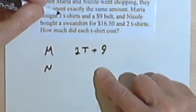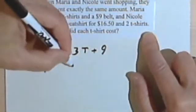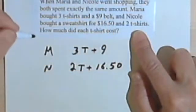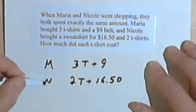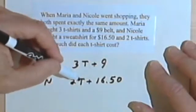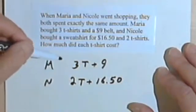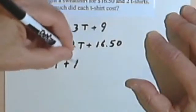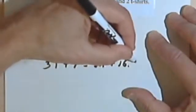Nicole bought... Let's see. I'm sorry, Maria bought 3 t-shirts. I have to get our information right. Nicole bought 2 t-shirts and she also spent $16.50. Now what we know is that Maria and Nicole spent the same amount of money. So if this is the amount of money that Maria spent, 3t plus 9, and this is the amount of money that Nicole spent, 2t plus $16.50, then these two amounts must be equal. So let's make an equation where we say that 3t plus 9 is equal to 2t plus $16.50.